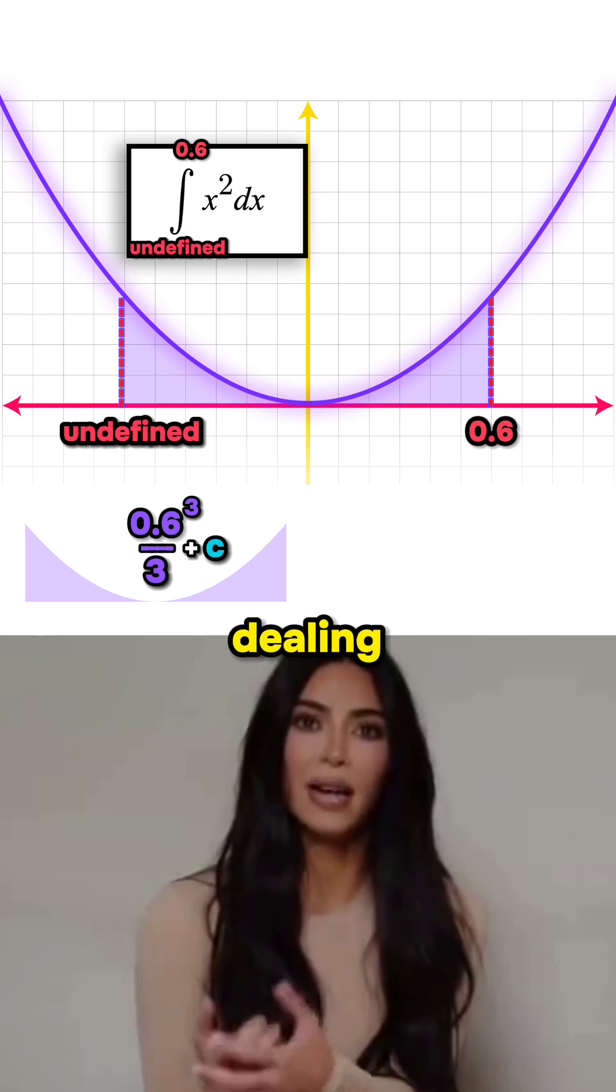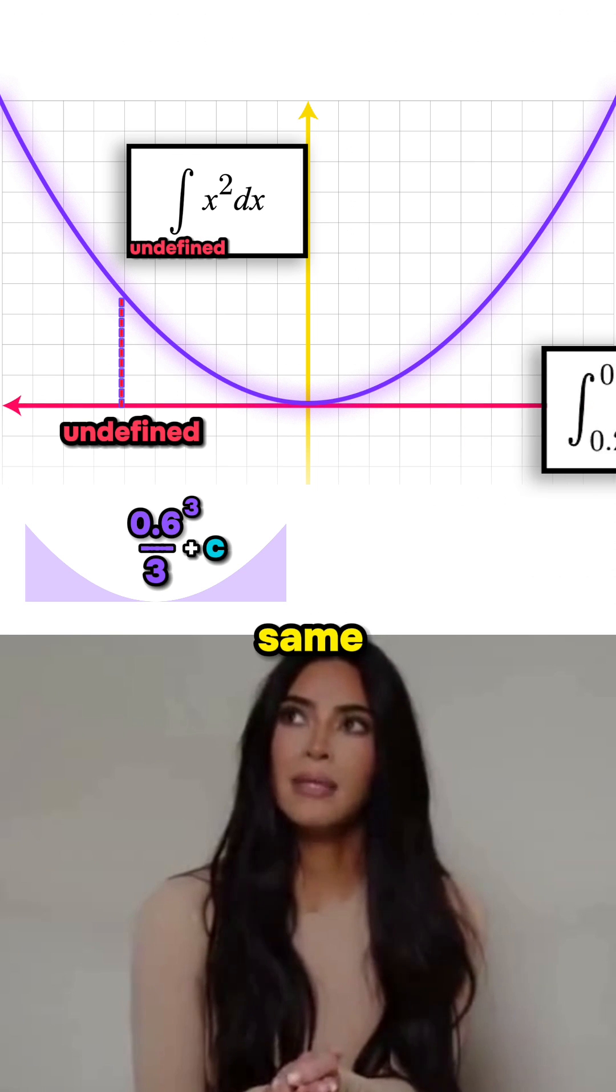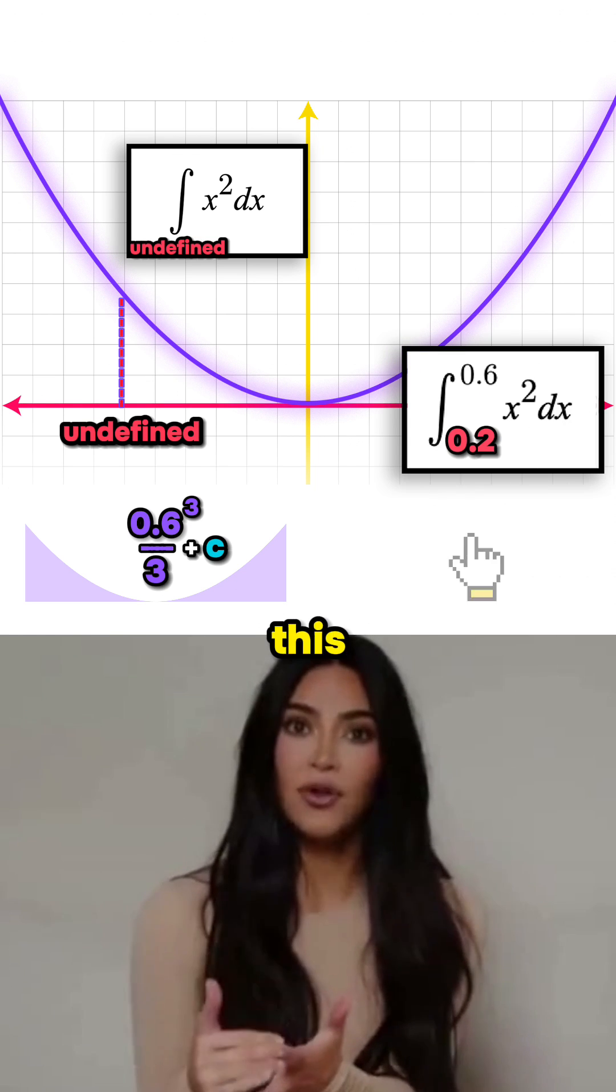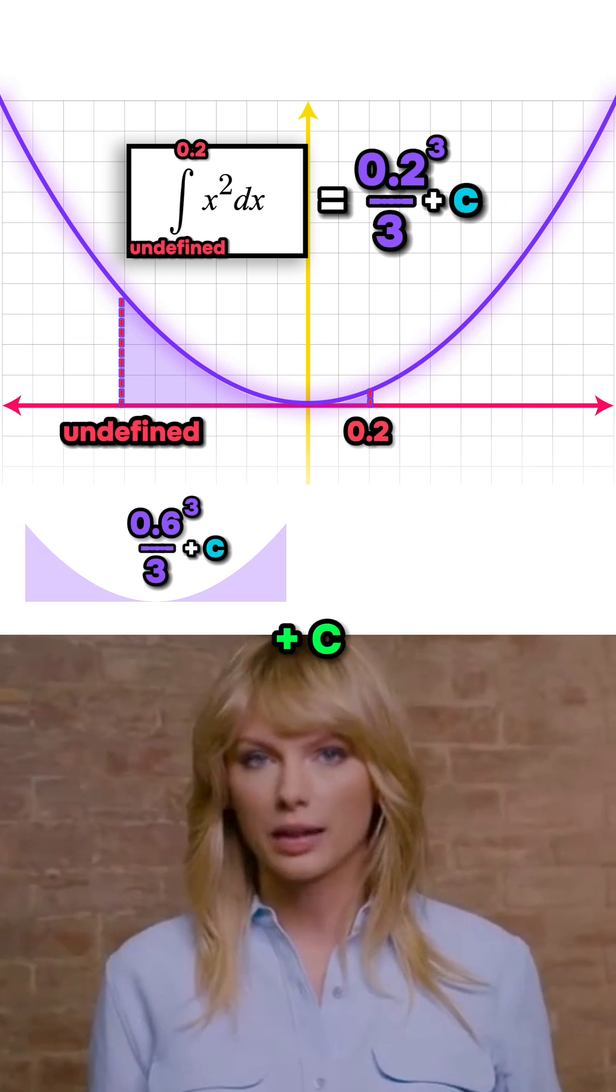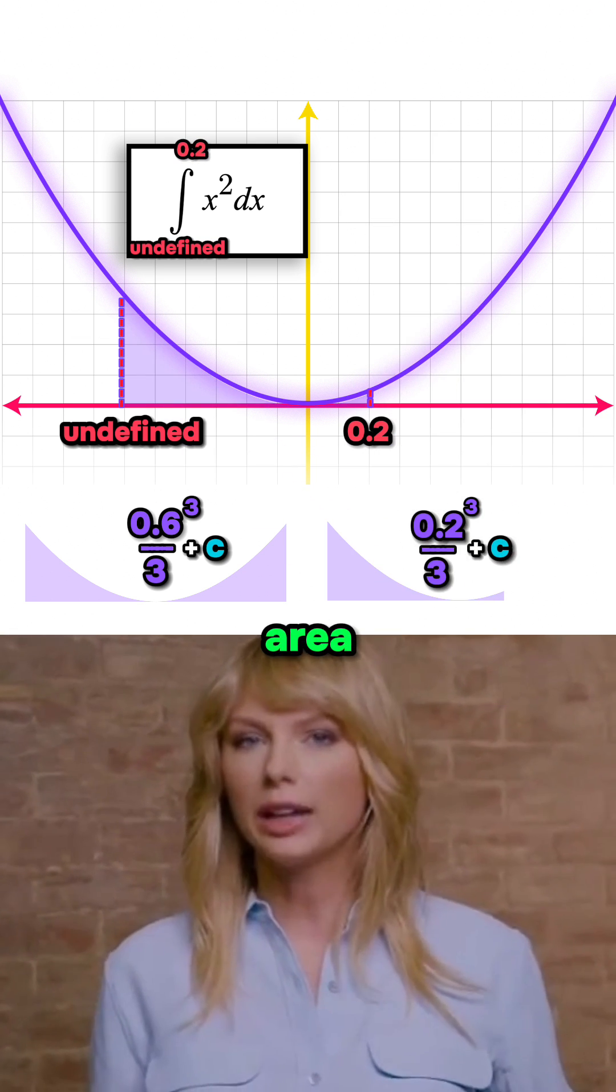Yep, so that's the first area we're going to be dealing with. Now let's do the same thing for our lower limit which is this 0.2 right here. So 0.2 cubed over 3 plus c will be the value of this second area here.